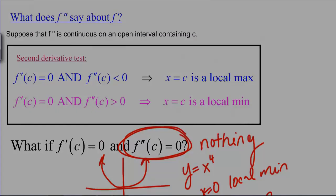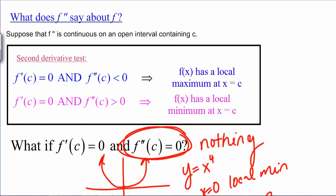The second derivative test is really nice if it gives you an answer because it works quickly. But if it gives you zero, then you're going to have to go back to the first derivative test.